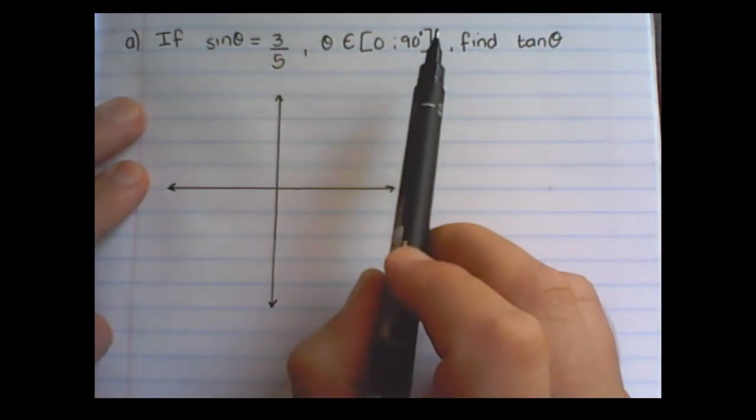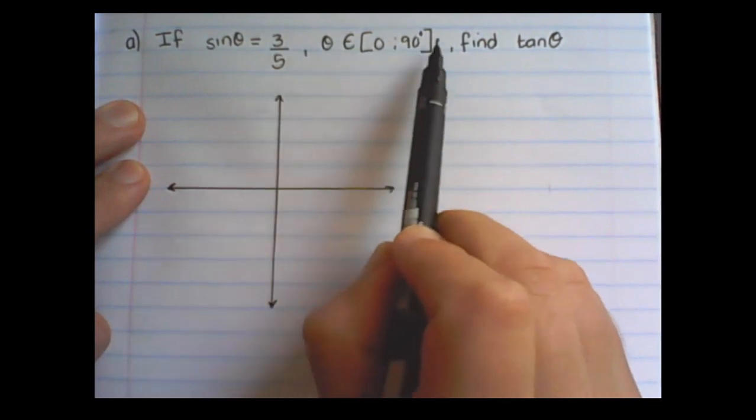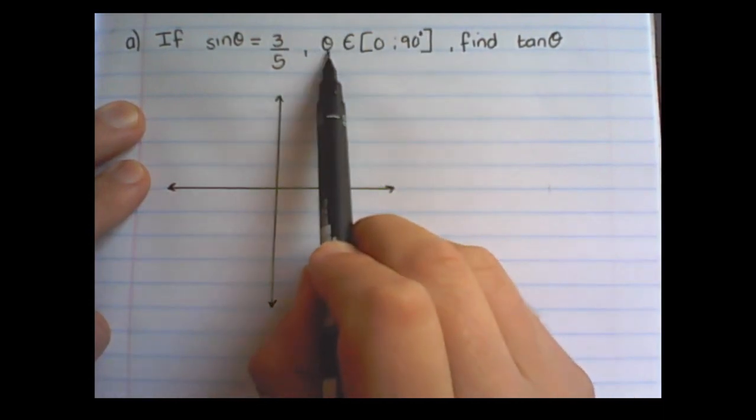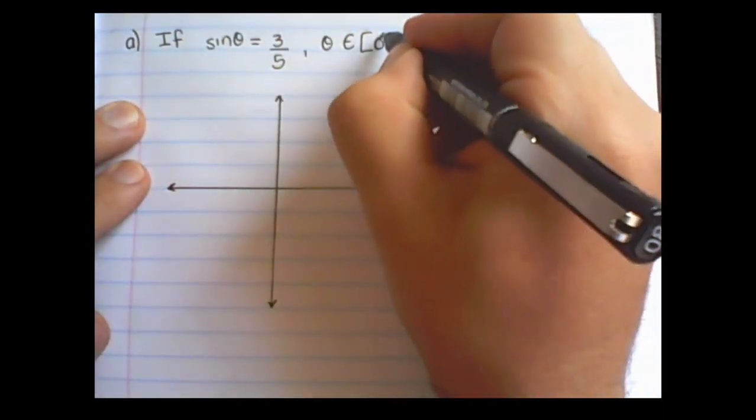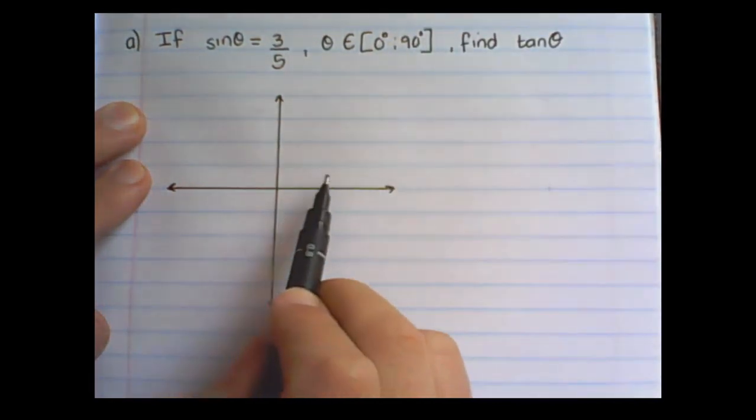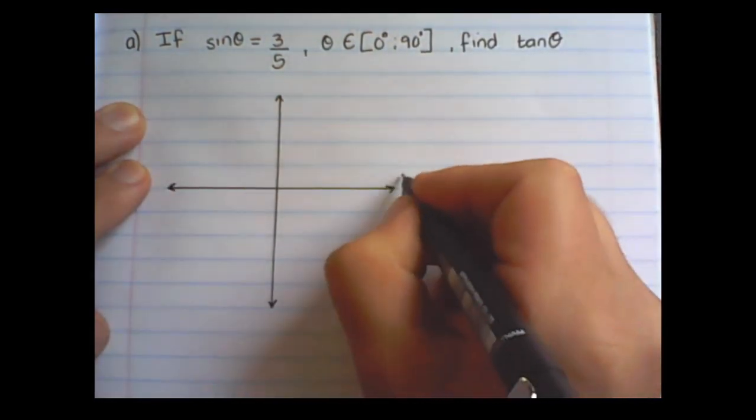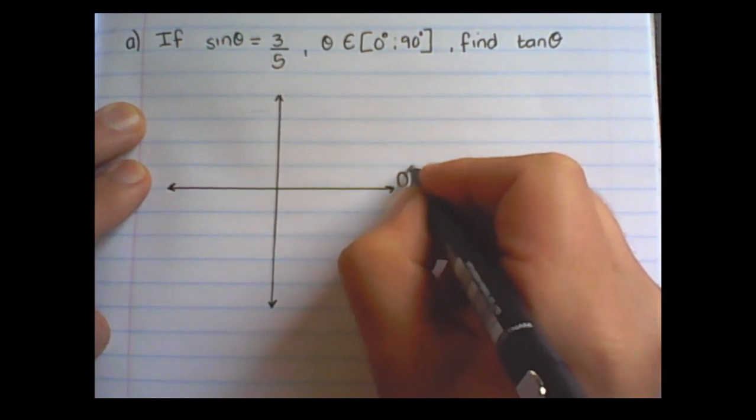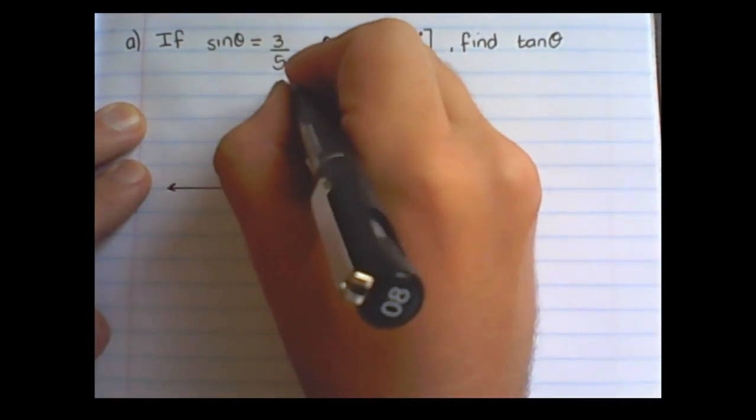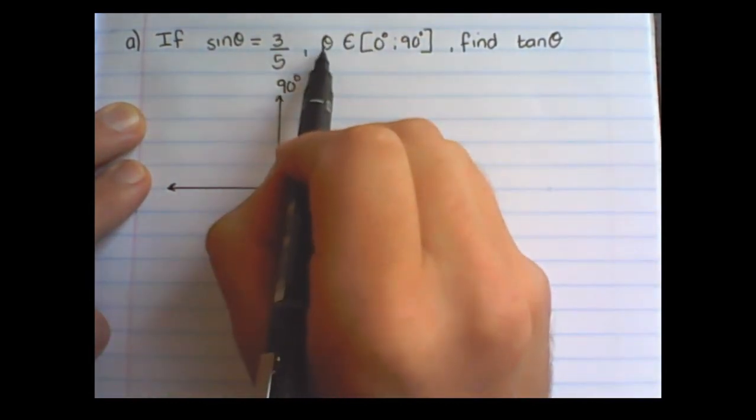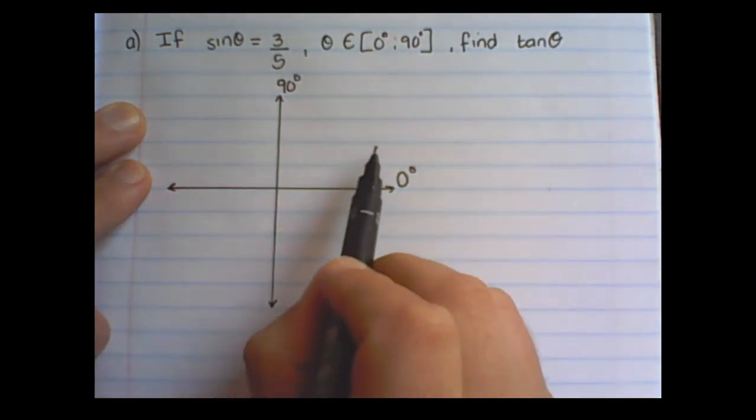Let's break this information down starting with the restriction. So θ is restricted between 0 and 90 degrees. On the Cartesian plane what it means, if that is 0 and 90 degrees, the angle size of θ must be somewhere in this quadrant.